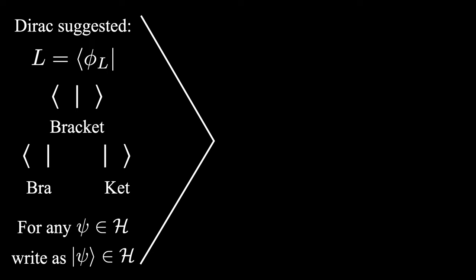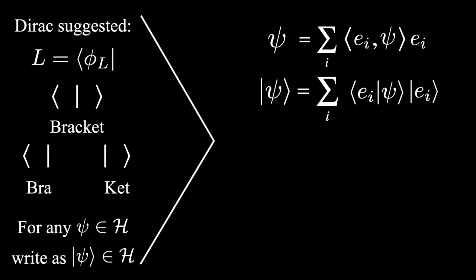It is a fact of linear algebra that any vector psi we take in the Hilbert space can be written as a linear combination of basis vectors e sub i in this manner. This is the standard mathematical way to write this. However, if we decide to use Bra-Ket notation to express this, then we need to make sure psi and e sub i are written as kets and the inner product is written with a bar instead of a comma.